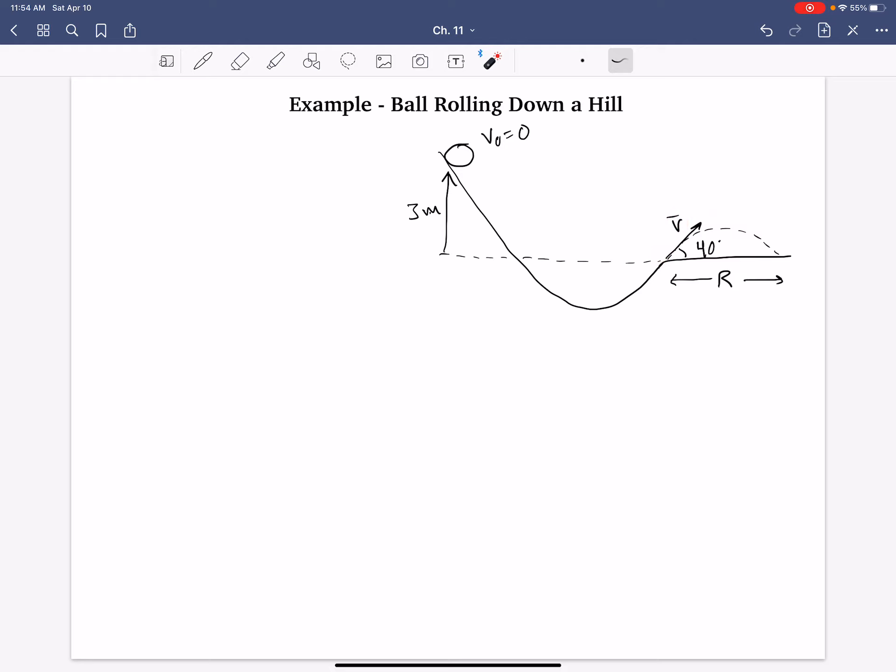Then, part two will be purely two-dimensional kinematics. We can use the range equation, since it starts and lands at the same height, we can use the range equation to find that horizontal distance. So, part one, conservation of energy. Energy initial equals energy final.